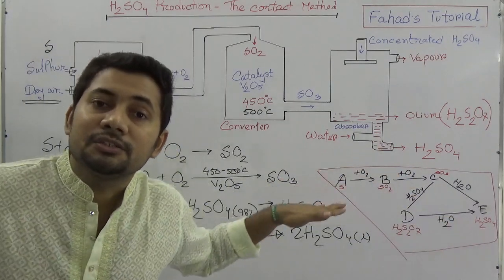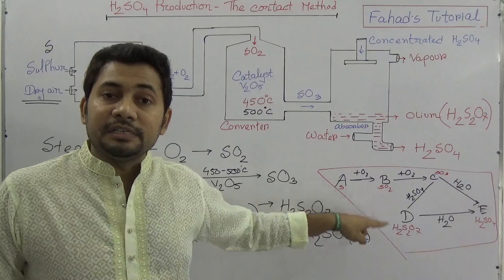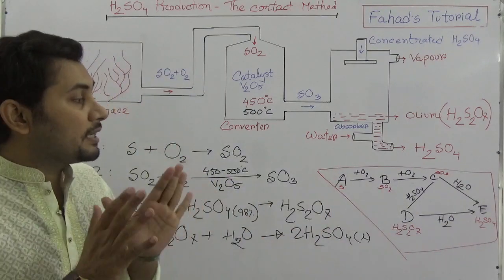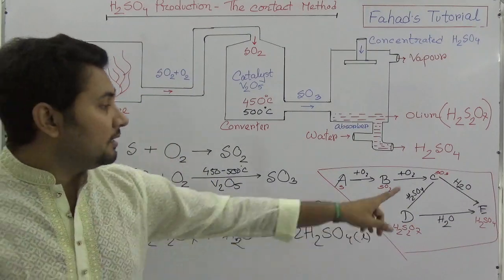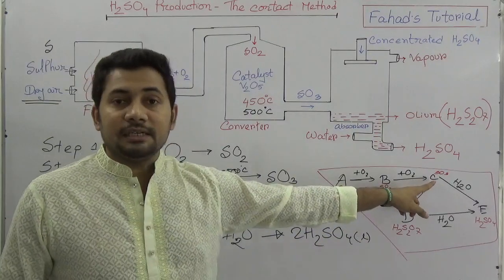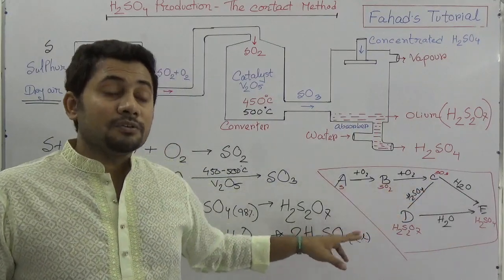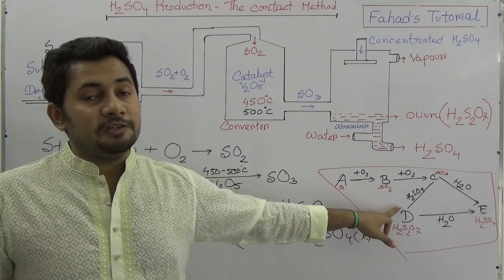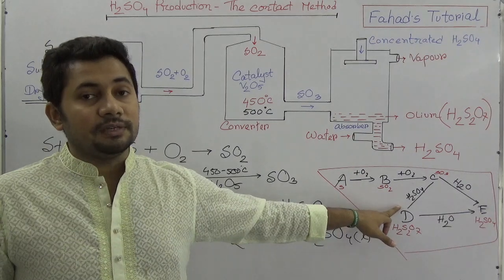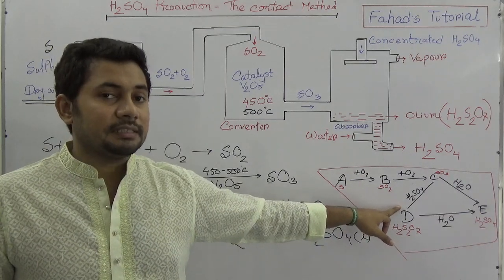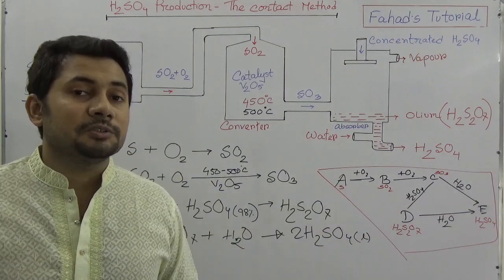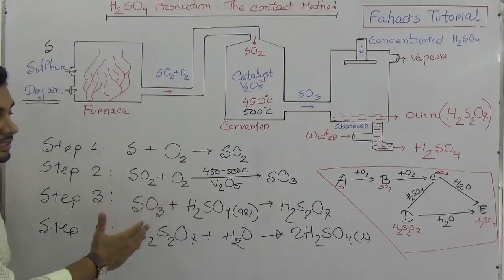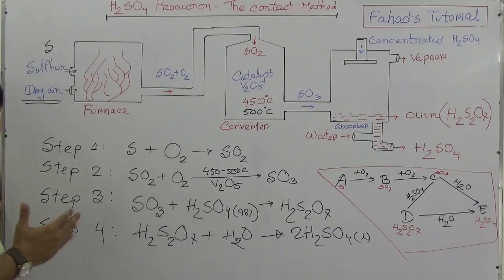A common question is: why do we not go directly from C (sulfur trioxide) to E (H2SO4)? Why must we go through D? Because we cannot mix water directly with sulfur trioxide. Instead, we soak the sulfur trioxide with 98% concentrated sulfuric acid to produce pyrosulfuric acid or oleum. That is the step we need to follow.